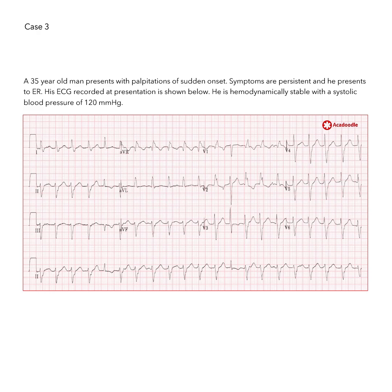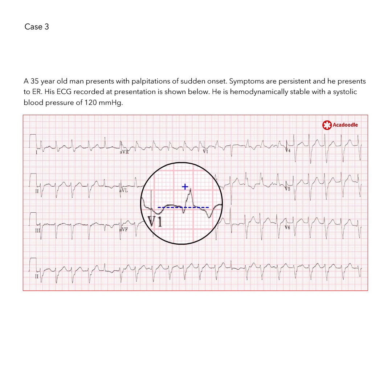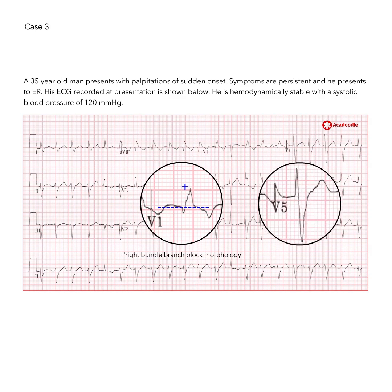On this ECG, the abnormal morphology of the QRS complexes is striking, with a right bundle branch block morphology in lead V1. On close examination, the QRS duration is above the normal range. This is a broad complex tachycardia with a right bundle branch block morphology.